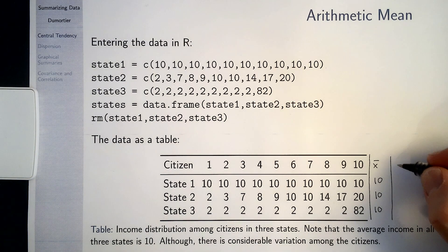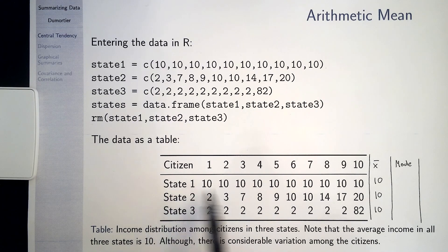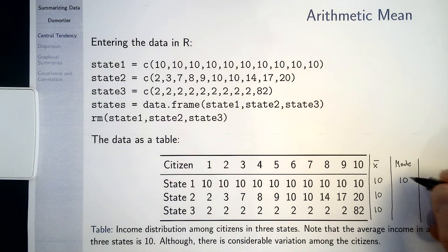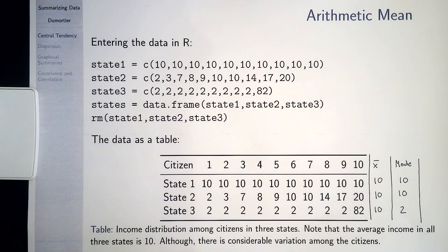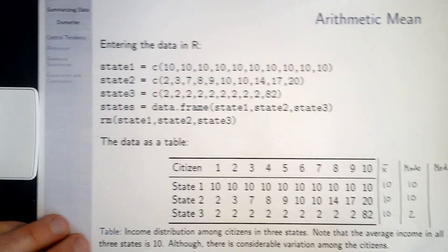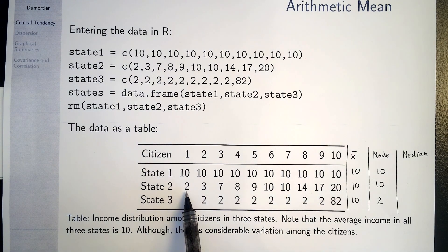Now let us look at the mode. The mode is the value which appears most often. In state 1, the mode is 10. In state 2, the mode is 10 again. But in state 3, the value which appears most often is 2. Note that the values are already ordered in ascending order — in state 1 everybody earns 10, in state 2 it goes from lowest to highest, and the same is true for state 3.